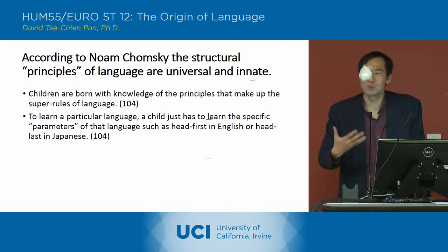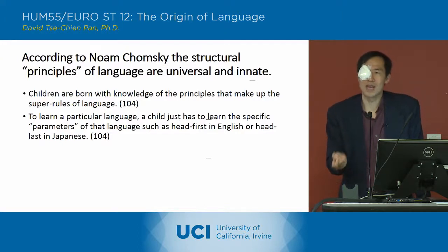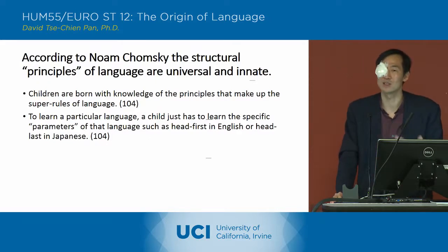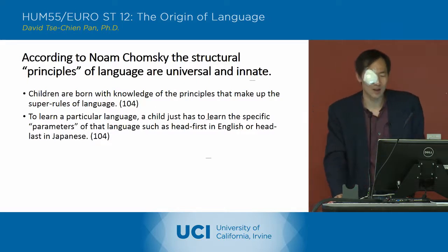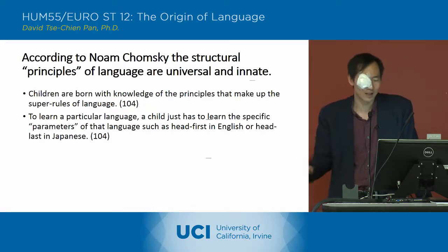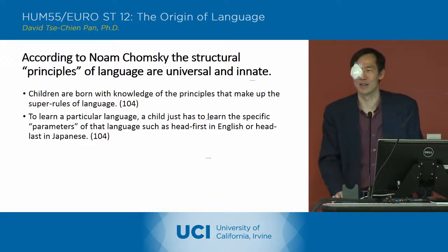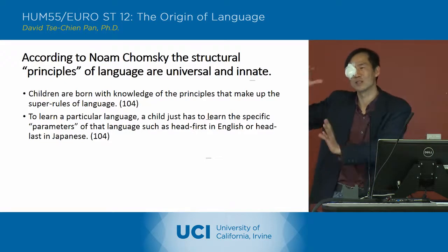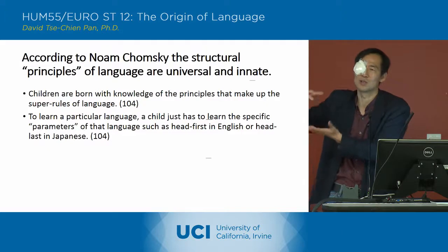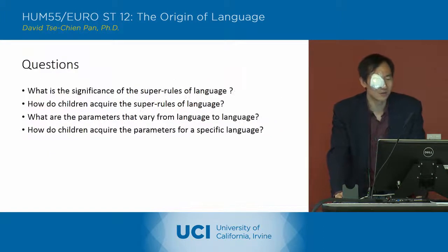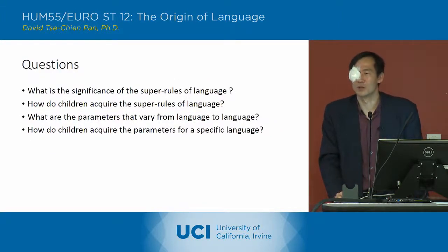These structural principles of language are universal and innate — that's the key claim. Children are born with knowledge of these principles that make up the super rules of language; they don't have to be taught those super rules, they naturally have them. To learn a particular language, you just have to learn the specific parameters — head-first or head-last — and the specific vocabulary. Universal grammar gives us the super rules, culture gives the particular vocabulary and parameters, and together you get the language in the child. That's the process of language learning for Pinker and Chomsky.